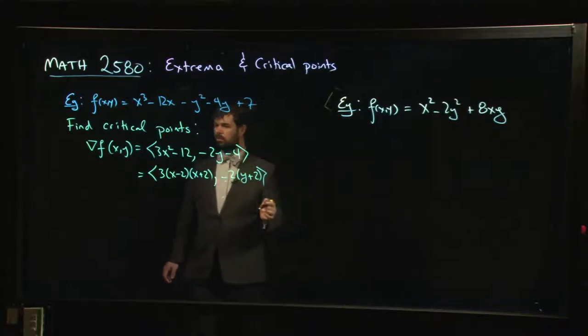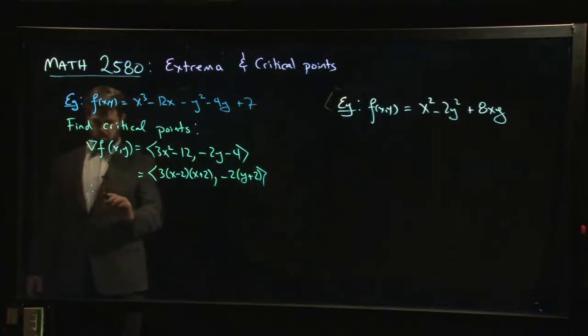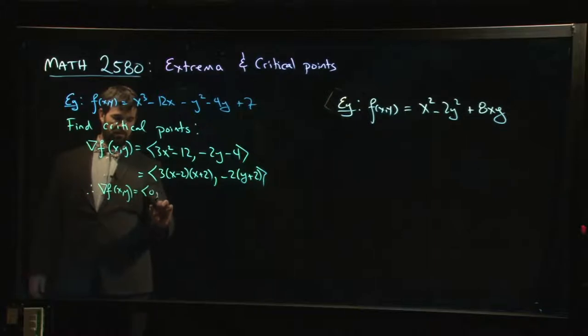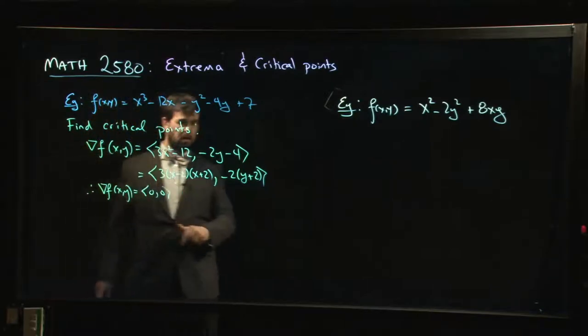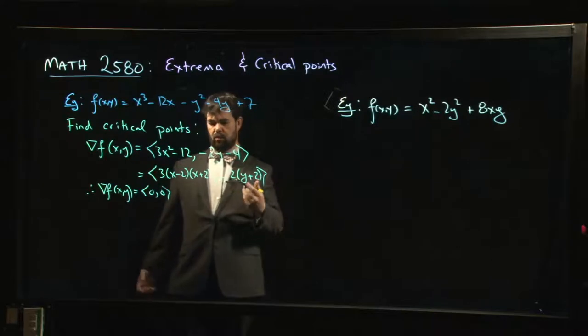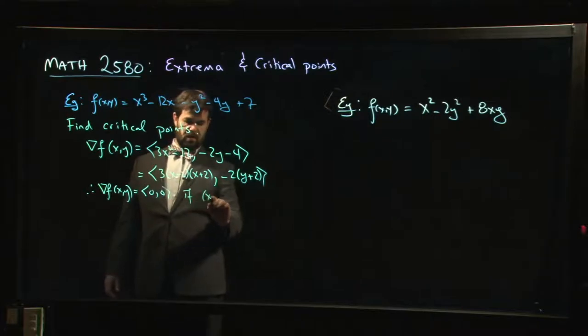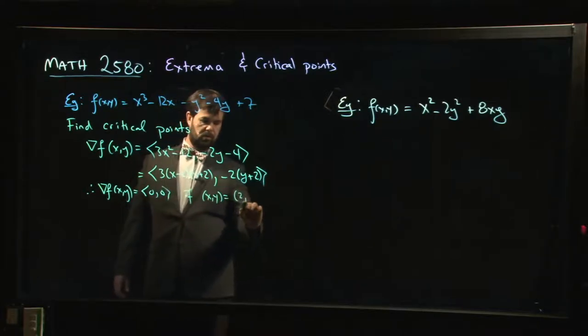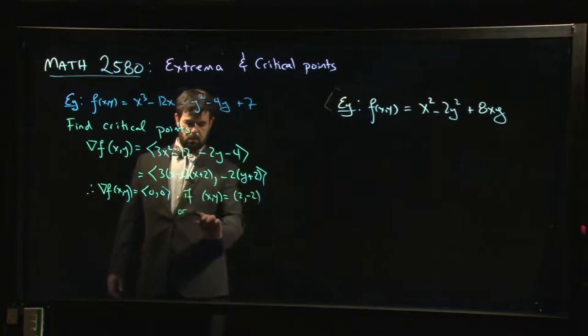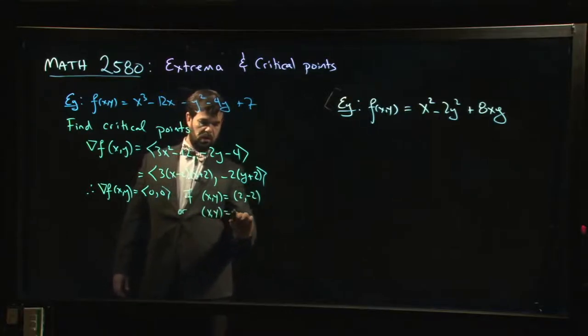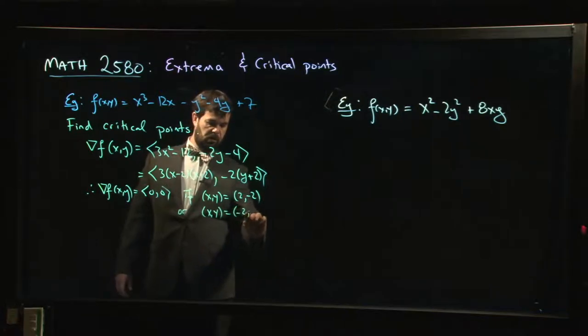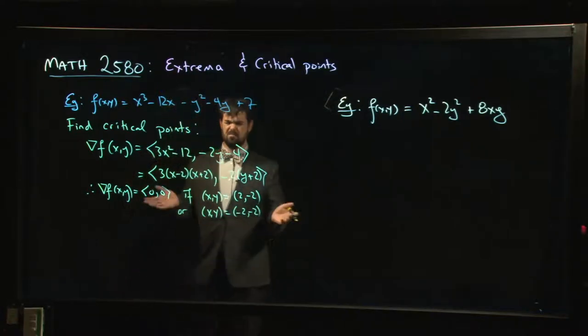So when is the gradient equal to 0? The gradient is going to be the 0 vector. Well, we can see that this component is going to be 0 for either x = 2 or for x = -2. And here we always need y = -2. So there's actually two possible points. So we could have (x,y) equal to (2,-2) or (x,y) equals (-2,-2).